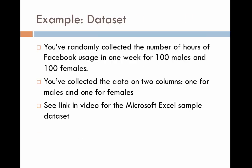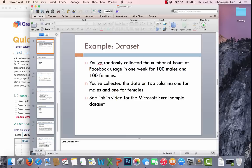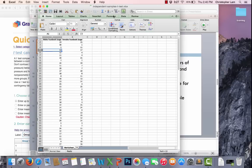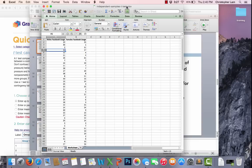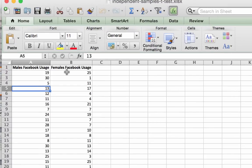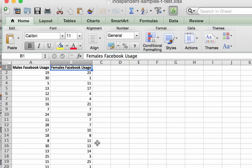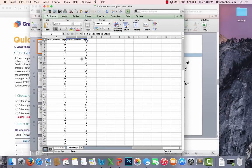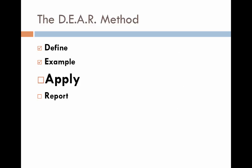So let's walk through a sample data set. For this video tutorial I've provided an actual sample data set. You've randomly collected the number of hours of Facebook usage in one week for 100 males and 100 females, collected in a spreadsheet with two columns — one for males and one for females. You can see the link in the video description. It's an Excel file that I will also post on Google Docs so anyone can access it. Here's what that data set looks like: male Facebook usage in column A, female Facebook usage in column B, with the number of hours per week for each participant.